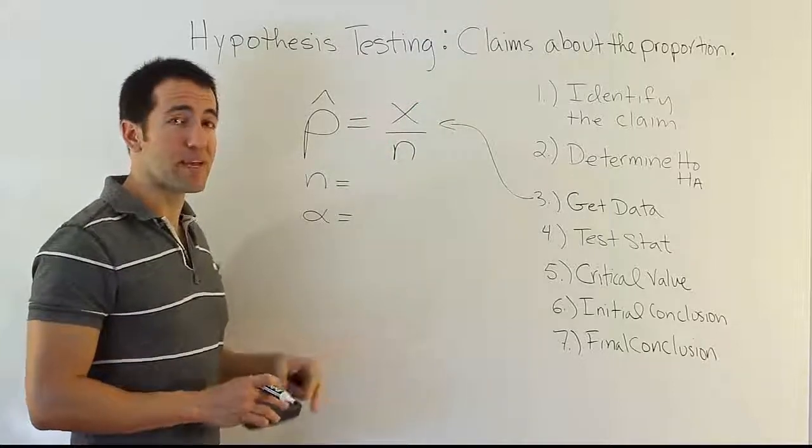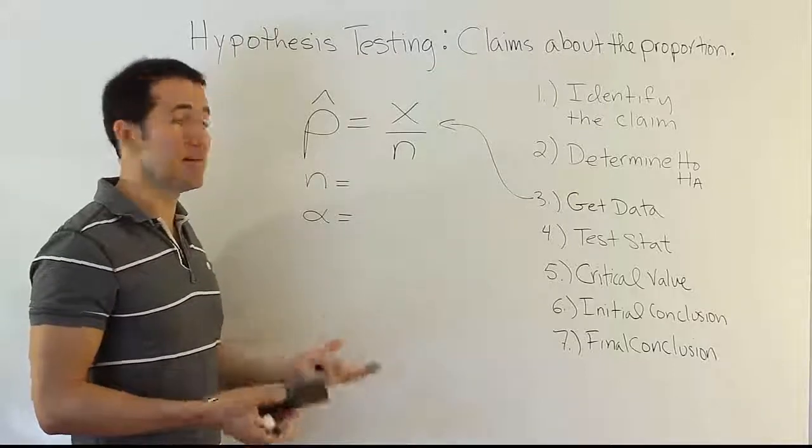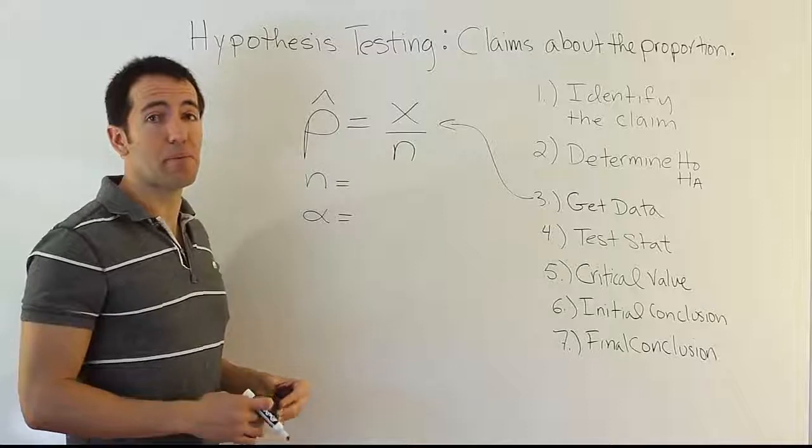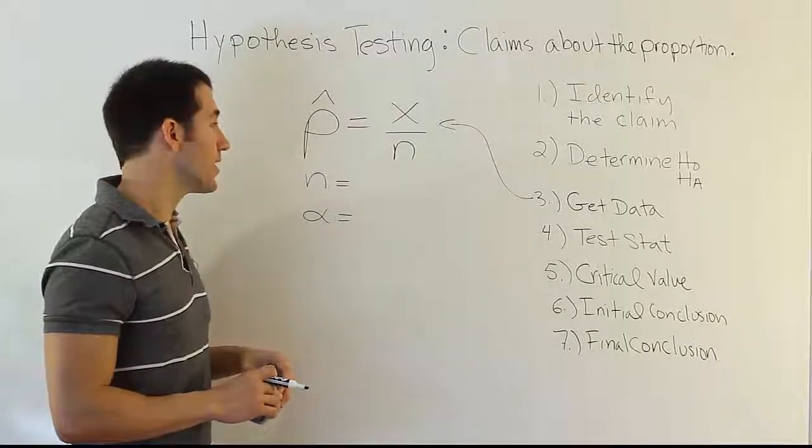And when they do that, they often run into this issue that there's no standard deviation. Well, that's a good heads up that you're dealing with a problem about the proportion. So at that moment, you want to take a break, go back, read the problem again, and say, hmm, okay, I don't see anything about the mean here. This is a hypothesis testing procedure about proportion. So that's a really helpful thing to know there's no standard deviation.